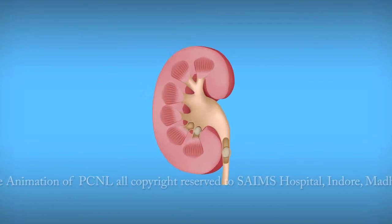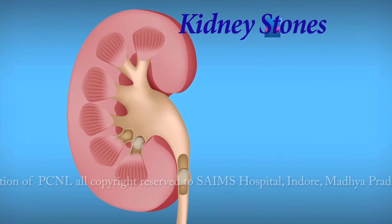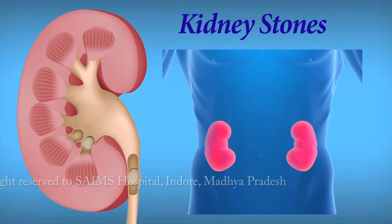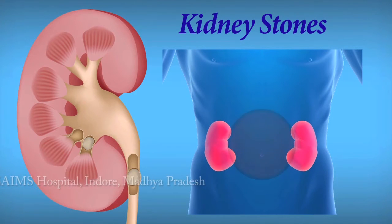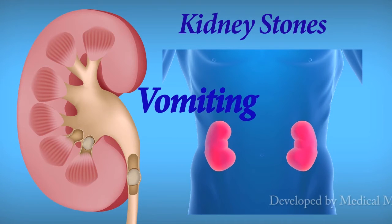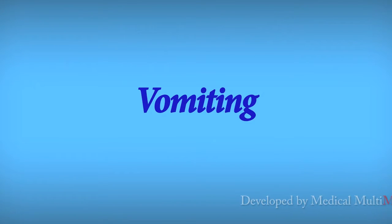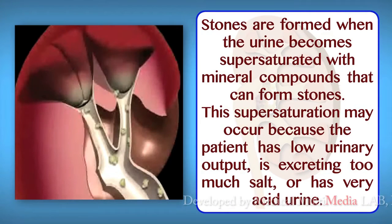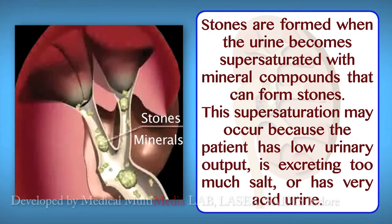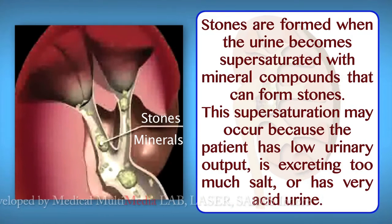Kidney stones is a very common clinical problem, which presents with severe pain in the flank region and may be associated with vomiting and blood in urine. Stones are formed when the urine becomes supersaturated, i.e. overloaded with mineral compounds that form stones.